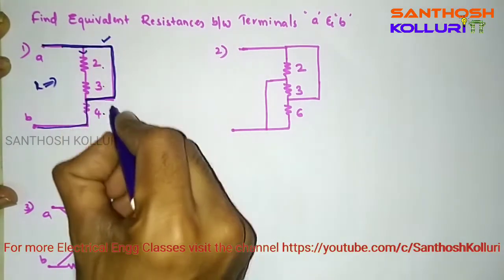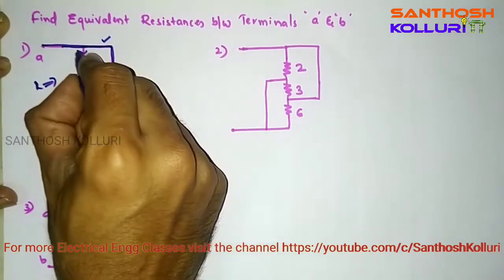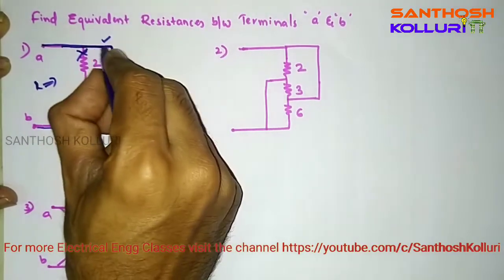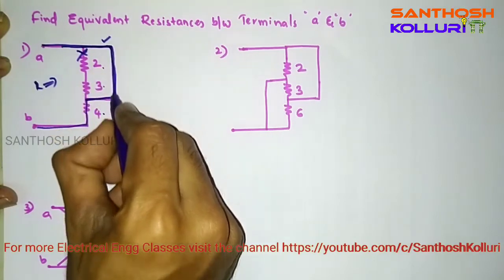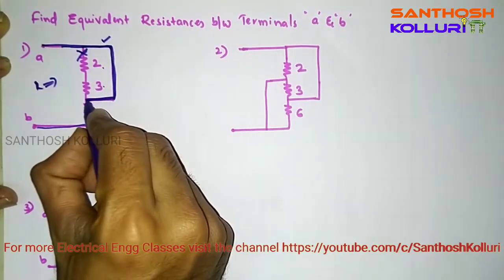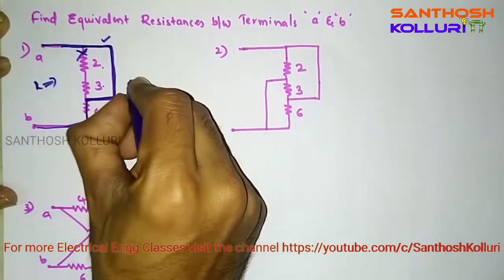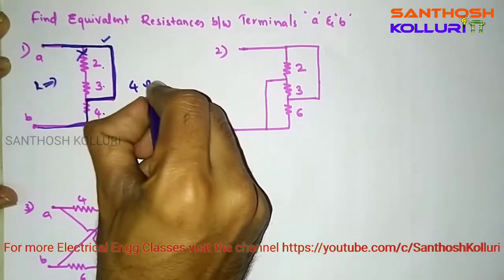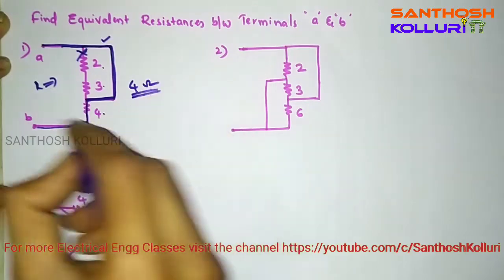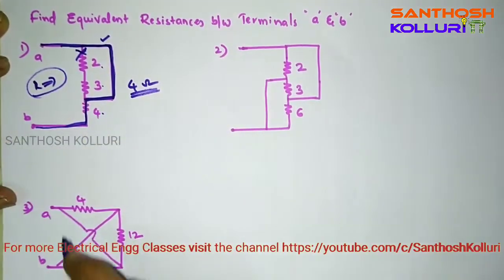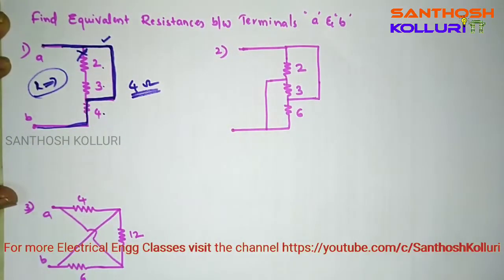It will prefer the short circuit path rather than the resistor path. The resistance offered by the current flow in this path is 4 ohms. So, the equivalent value of resistor connected across terminals A and B is 4 ohms.